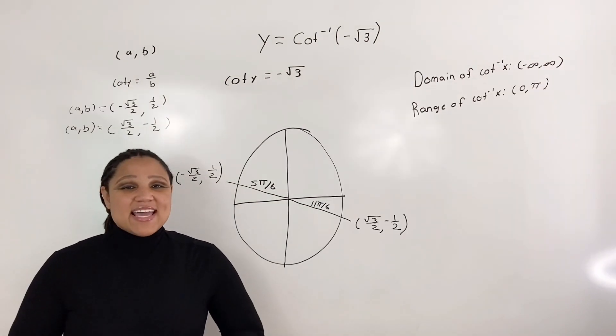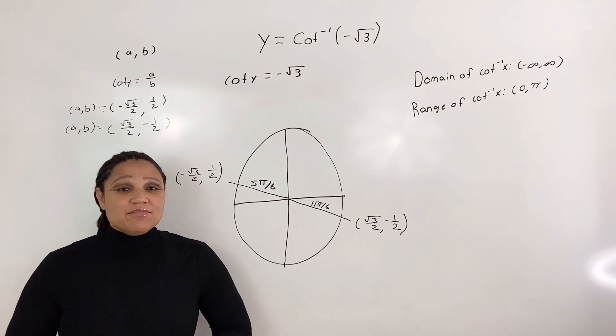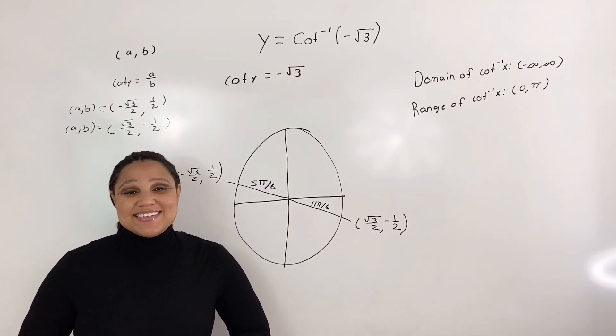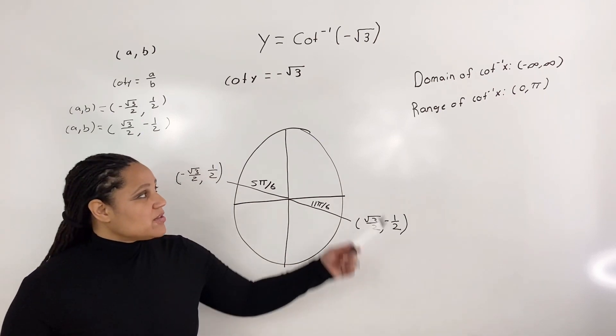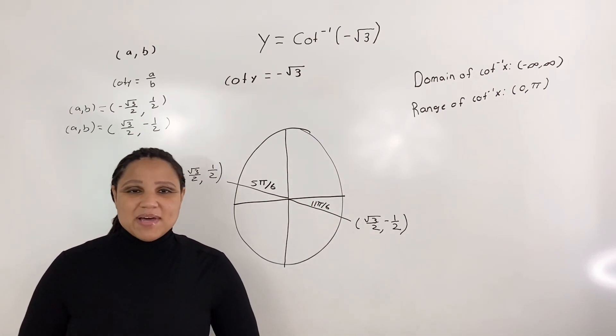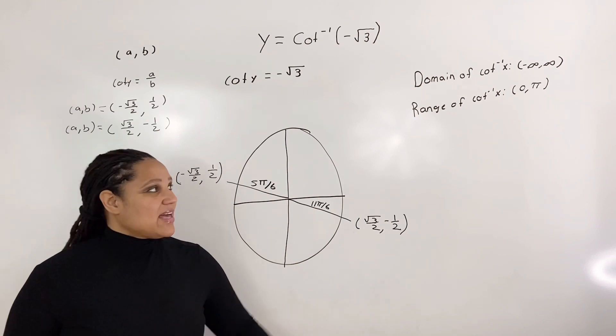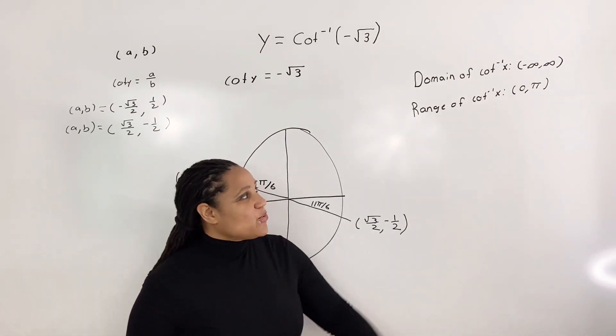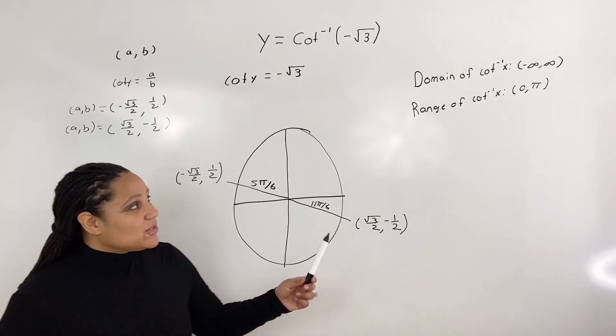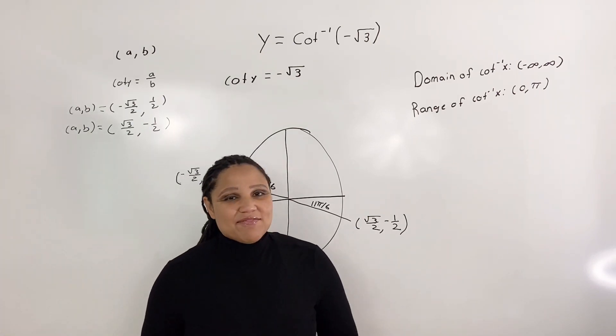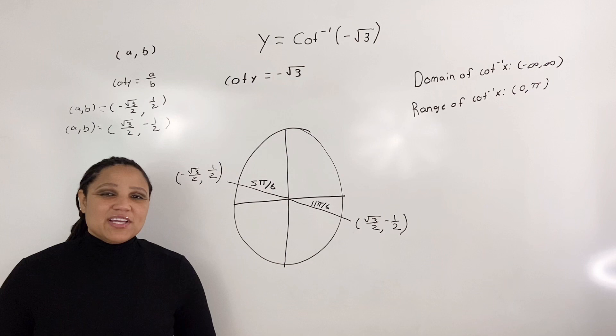Note that it is possible to define inverse cotangent using a different range. However, in this video, we will use the range from 0 to pi. Also note that we have parentheses here, so we're not actually including the 0 or the pi, but we can have values that come very close to them.